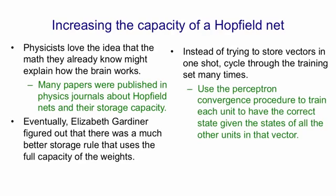What we're going to do is use the perceptron convergence procedure to train each unit to have the correct state given the states of all the other units in the global vector we want to store. You put the net into the memory state you want to store, then take each unit separately and ask: would this unit adopt the state I want for it given the states of all the other units? If it would, you leave its incoming weights alone. If it wouldn't, you change its incoming weights in the way specified by the perceptron convergence procedure — and those will be integer changes to the weights. You may have to do this several times, and if you give it too many memories this won't converge. You only get convergence with the perceptron convergence procedure if there is a set of weights that will solve the problem. But assuming there is, this is a much more efficient way to store memories in a Hopfield net.